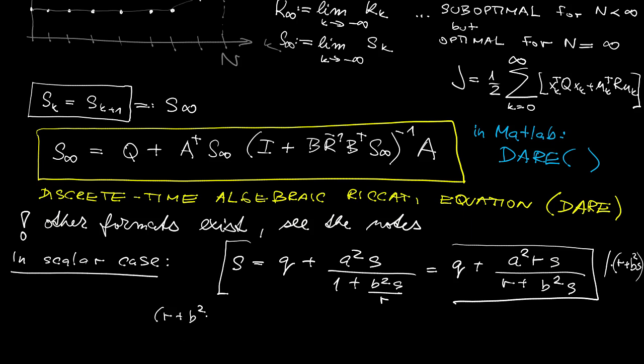Let's now multiply both sides by r plus b squared times s. I think it's now pretty obvious what our algebraic Riccati equation actually stands for, right? It's a quadratic equation, quadratic in s.